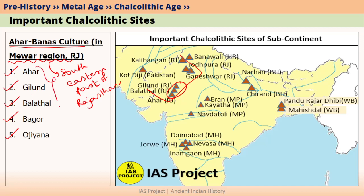These three are generally the most important. You can remember these three, or at least these two. Ahar is located here, then we have Balathal, and then we also have Gilund.